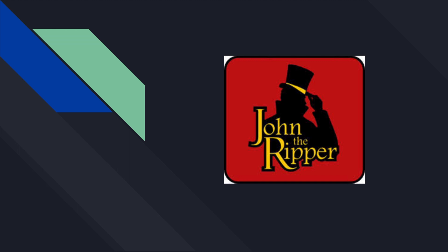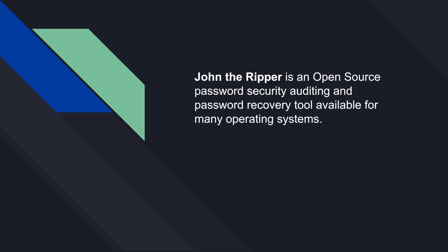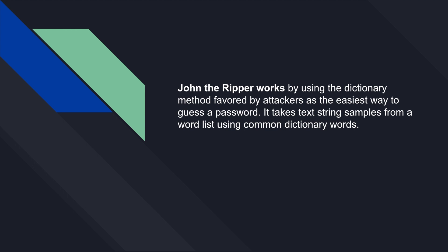So what is John the Ripper? It's actually an open-source password security auditing and password recovery tool. It can be used to extract different passwords and crack hashes of RAR and zip files. John the Ripper works best on the dictionary method, which means it matches different strings in the dictionary with the hashes. We can also crack hashes using hashcat, but the easiest tool to use for zip and RAR is John the Ripper.